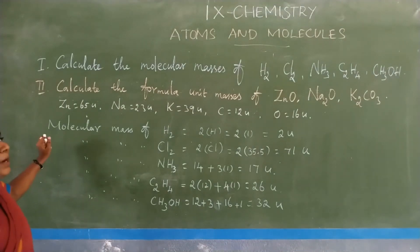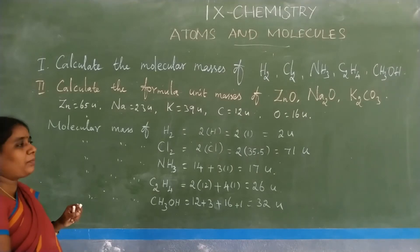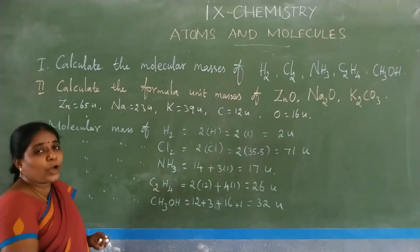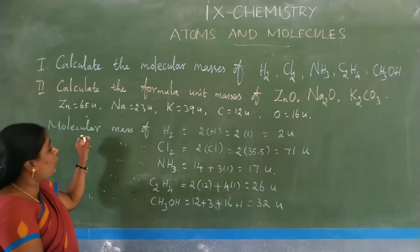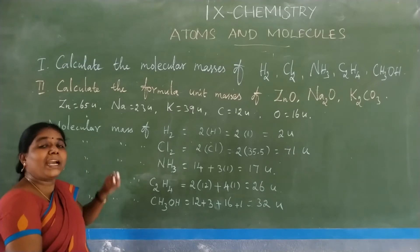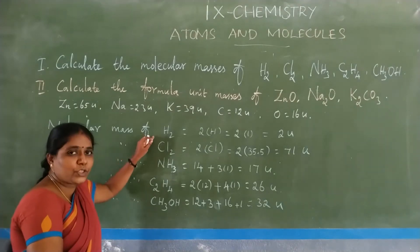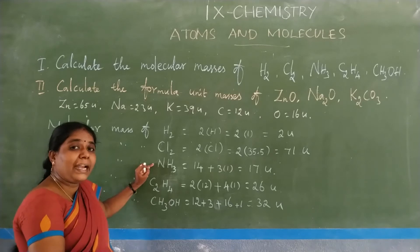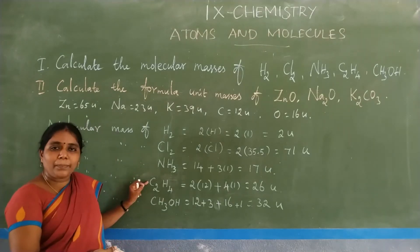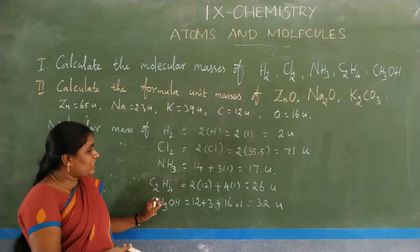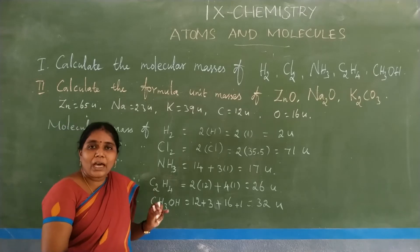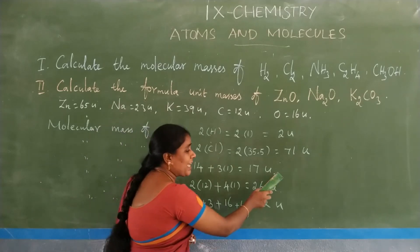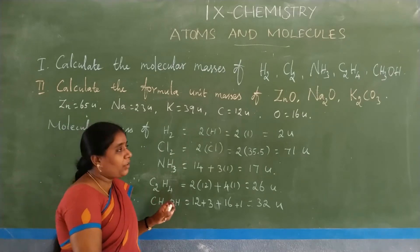This is the calculation of molecular masses. We calculate based on atomic masses: hydrogen = 1, chlorine = 35.5, nitrogen = 14, carbon = 12, oxygen = 16 unified mass. You must know the atomic masses first, then calculate the molecular mass. The unit for molecular mass is U — unified mass.